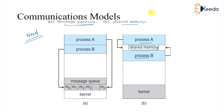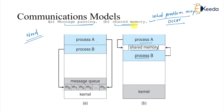That covers cooperating processes. In the next section we are going to talk about what problems may occur due to shared memory or message passing. Those problems will lead to the foundation of process synchronization. That's all for this discussion, thank you very much.